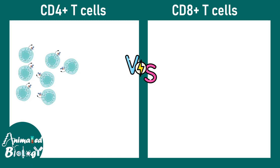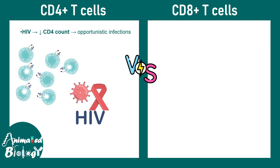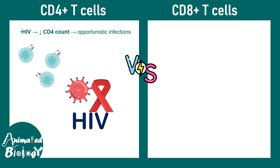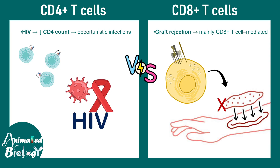Overall, CD4 positive cells are very important in the context of HIV, as their count is reduced in HIV infection. CD8 positive T cells are really important in the context of killing virus infected cells and also in the context of graft rejection.